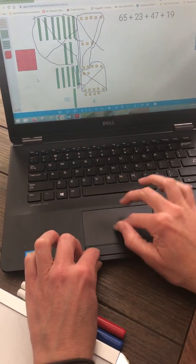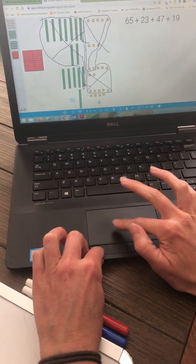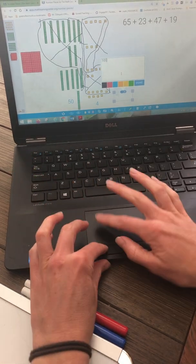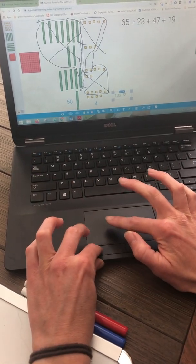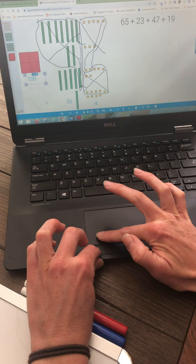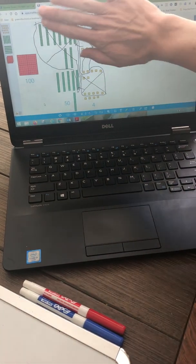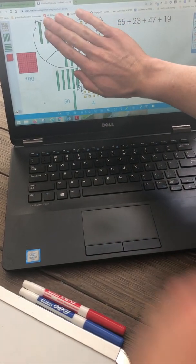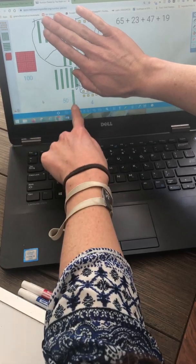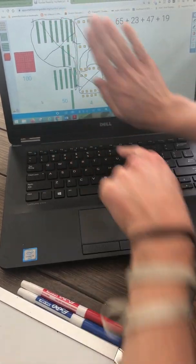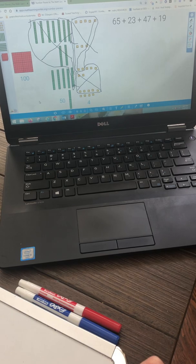And then, now I have 100. Because I bundled 10 tens together to make 100. So, let's see if I can find my sum. Remember, anything that's crossed out won't count anymore. So, I have 154. My sum is 154.